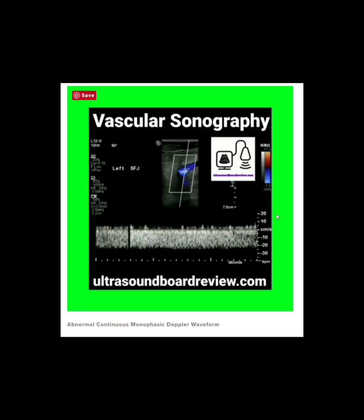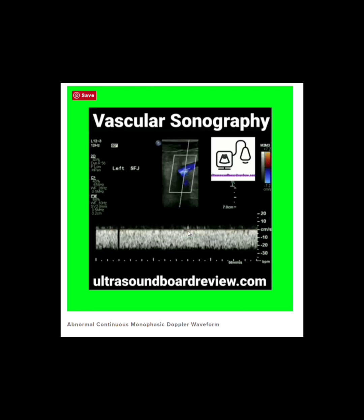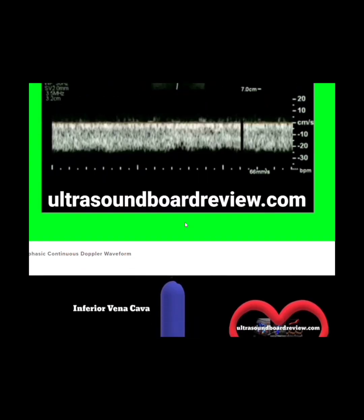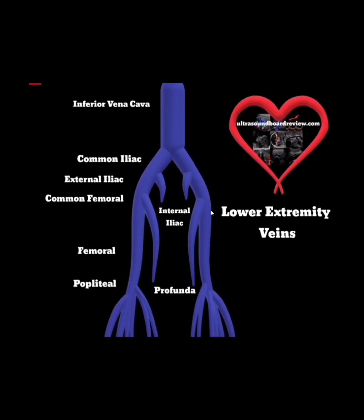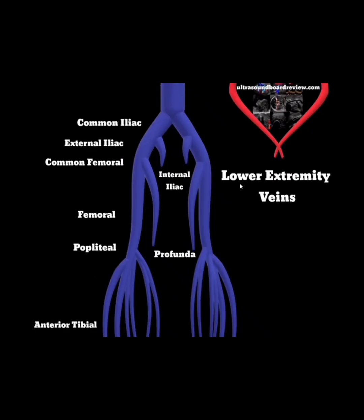This waveform is called a continuous monophasic waveform, which indicates that an obstruction is downstream while you're evaluating upstream. For example, if you were evaluating in the femoral vein, that means the disease would be downstream or proximal. Going back to the river analogy — you flow downstream without trouble, but to go upstream you have to turn around and swim.